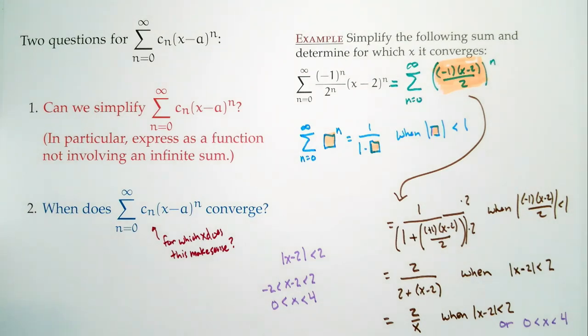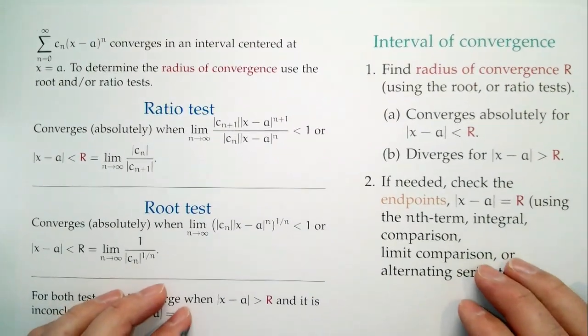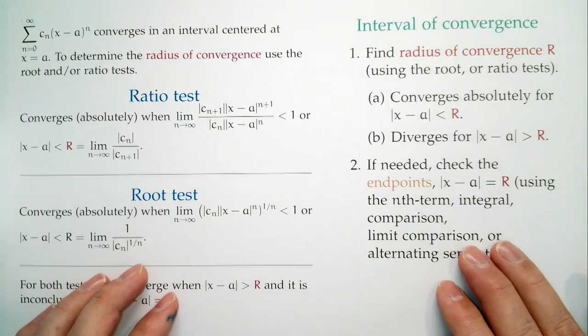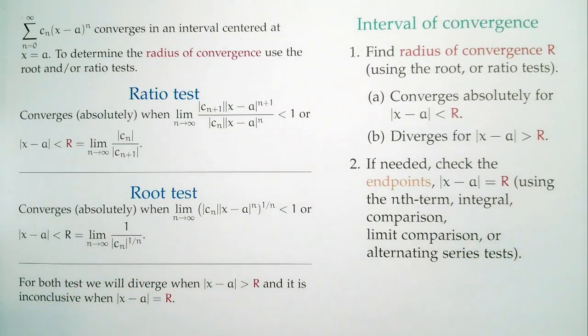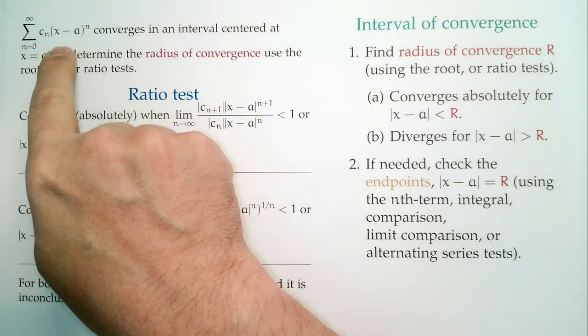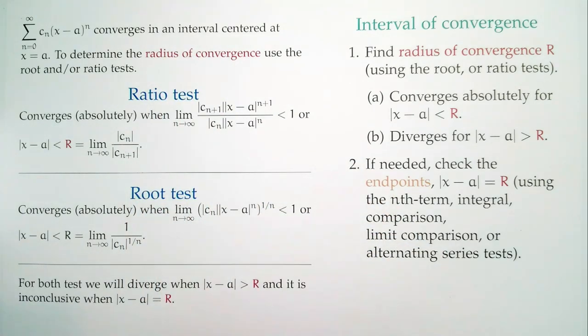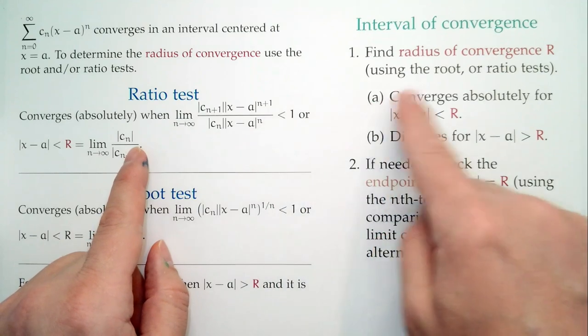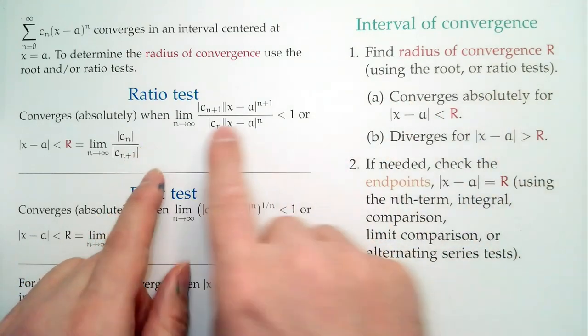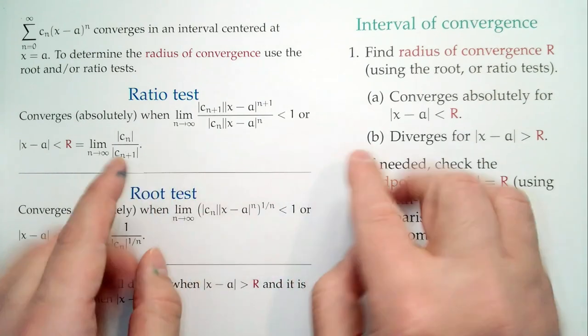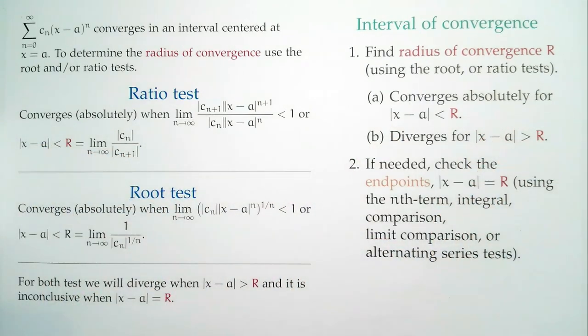So when do things converge and when do they diverge? It turns out — and this is not totally obvious — when we have convergence of our series, it converges in an interval. It's not going to converge a little bit here and then diverge and then a little bit here. No. It's always going to be: it converges here and then it diverges out there. So we're going to talk about what that interval looks like.